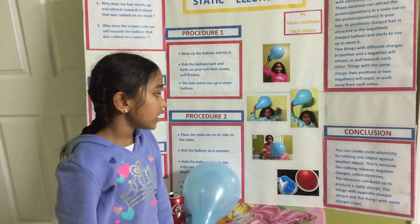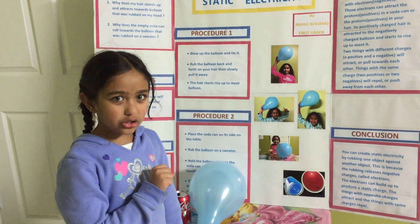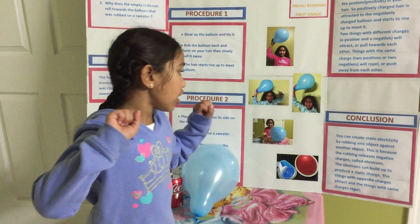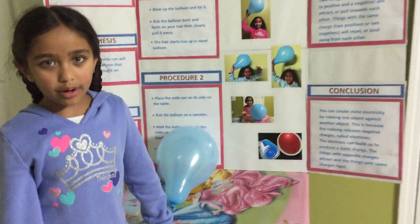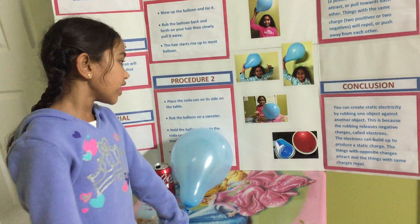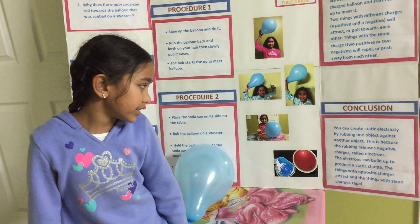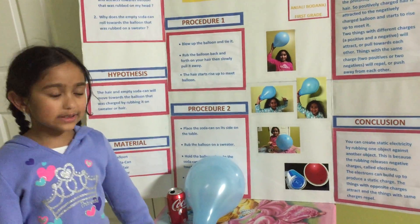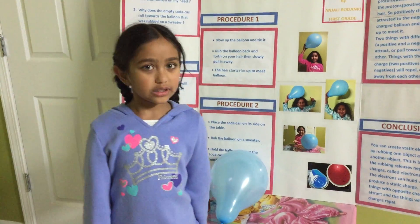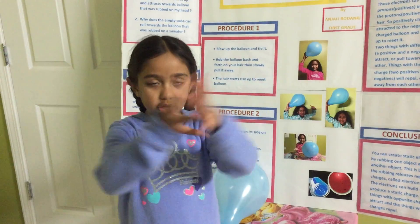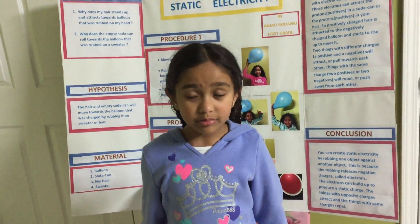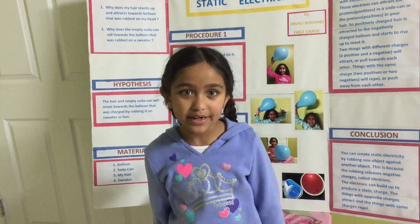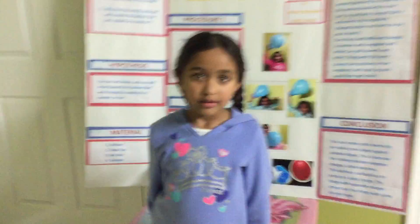My conclusion is: you can create static electricity by rubbing one object against another object. This is because the rubbing releases the negative charges, called electrons. The electrons can build up to produce a static charge. The things with the opposite charges will attract and the things with the same charges repel. This is what my whole science project is about. Thank you and have a nice day.